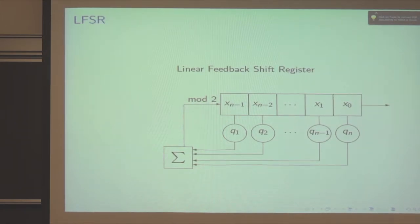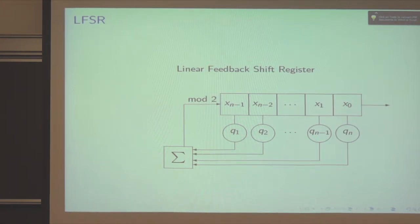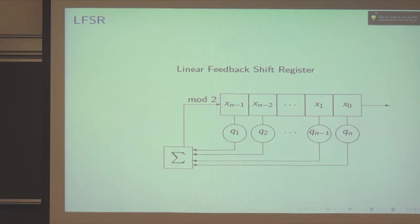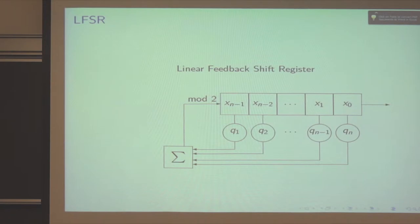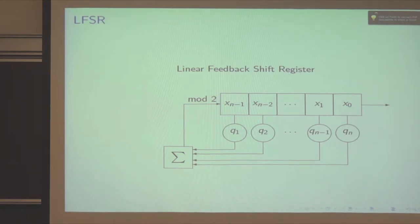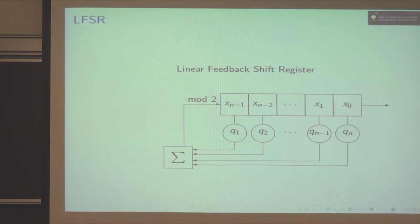This is the general linear feedback shift register. In an LFSR you have the main register — where the X's are — and the taps, which are where the circles are. The taps feed into a sum using XOR as discussed before, and that determines what the next bit will be. Everything in the shift register is ones and zeros. You multiply the X's and Q's: if Q_n was a 1 and X_0 was a 1, that adds 1 to the sum; if they differ, it adds nothing.